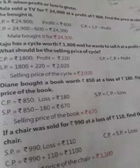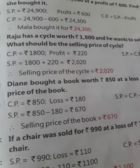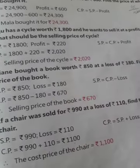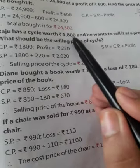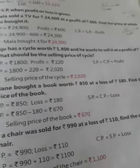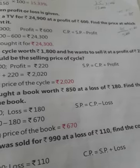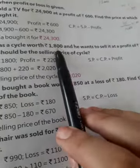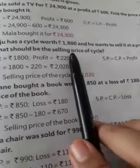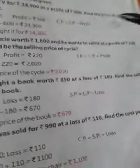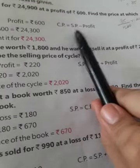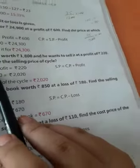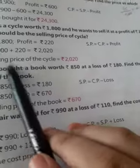Next example: Raju has a cycle worth Rs. 1,800 and he wants to sell it at a profit of Rs. 220. What should be the selling price of the cycle? Here, cost price is given as Rs. 1,800 and profit is Rs. 220. The formula is opposite: SP equals CP plus profit. So if we add CP and profit together, we get the selling price.